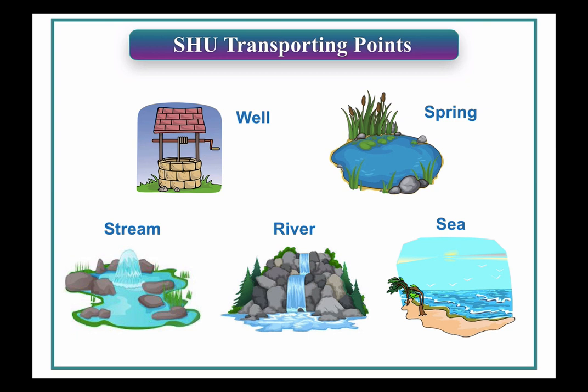So what does that have to do with acupuncture? All the well points are located at the fingers or toes — basically at the end of the limbs. But the Sea points are all located at the elbows or the knees. The He-Sea points at the elbow and the knees have the most amount of Qi and the most blood of all the five Shu transporting points. The Jing Well points have the least amount of Qi and blood, with the others in between.